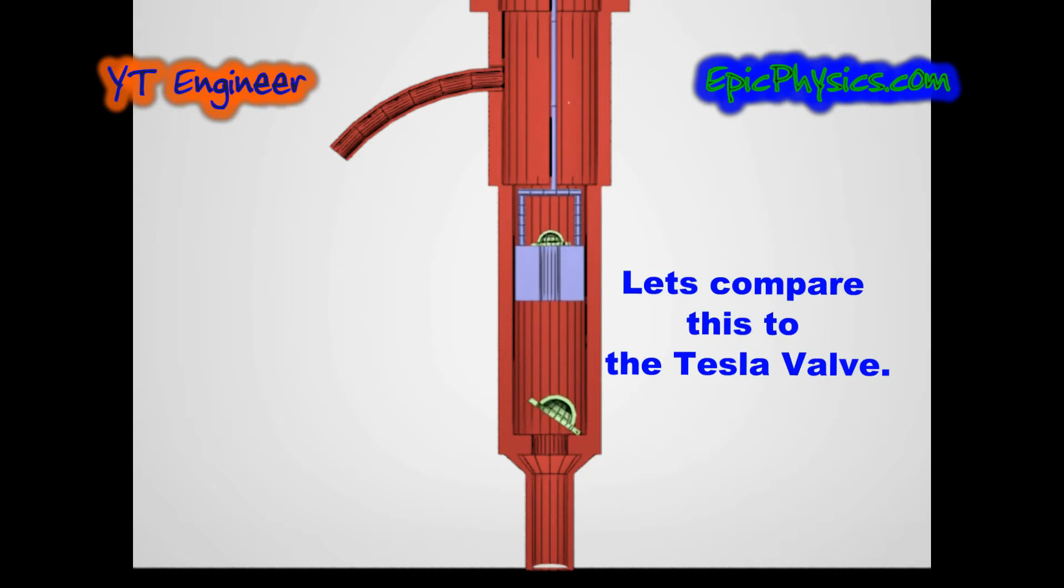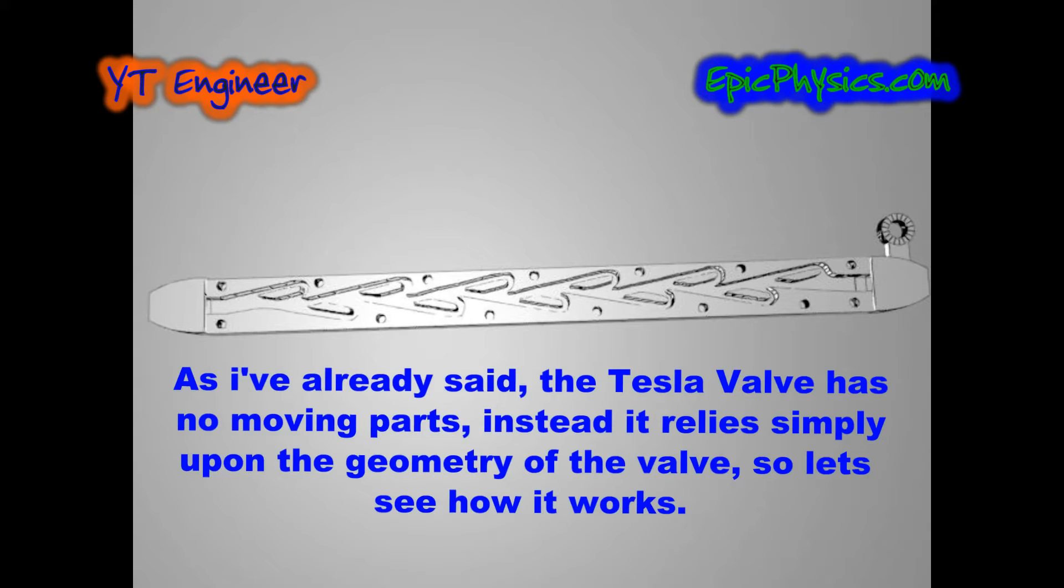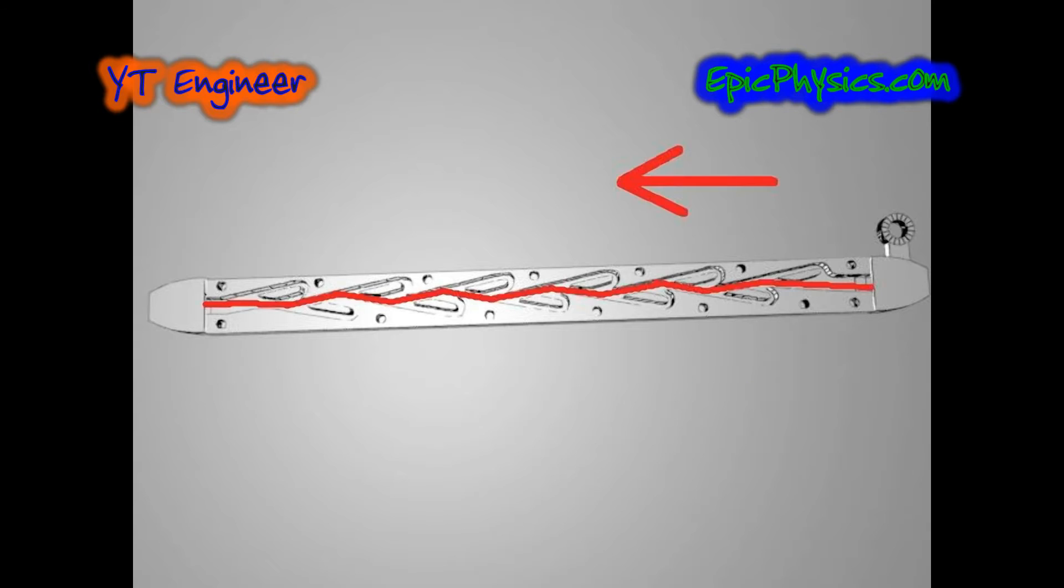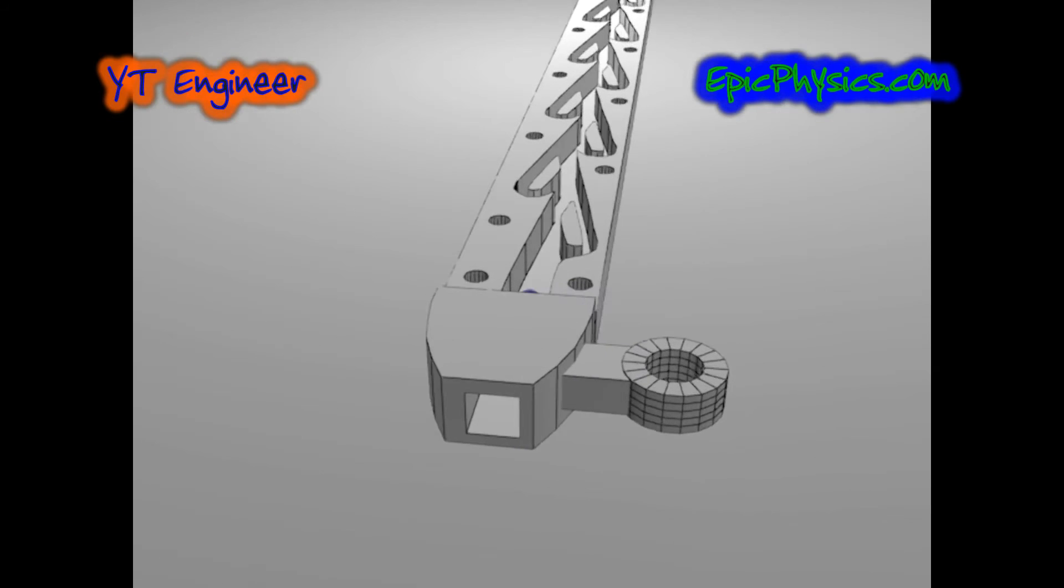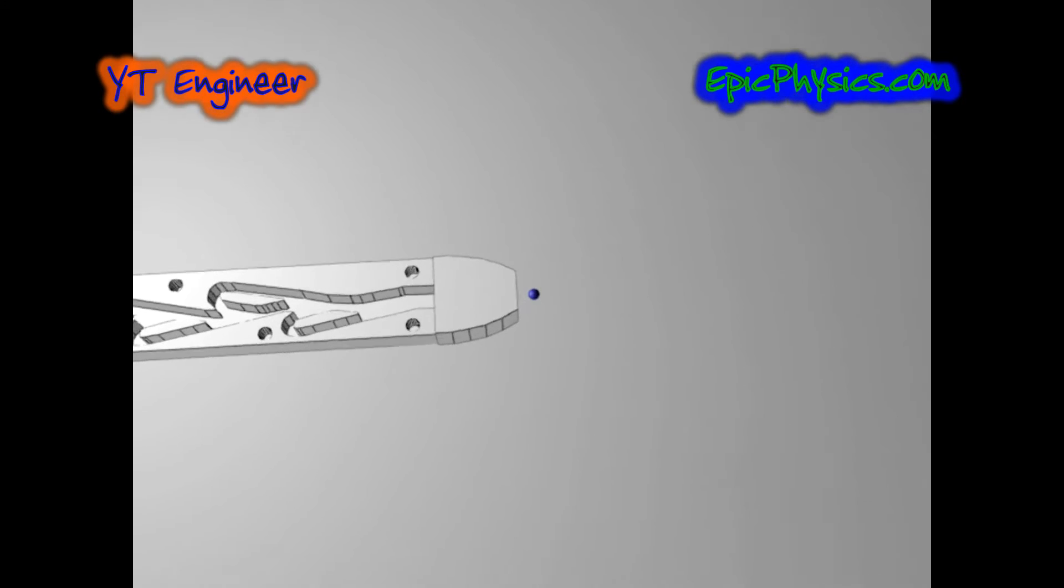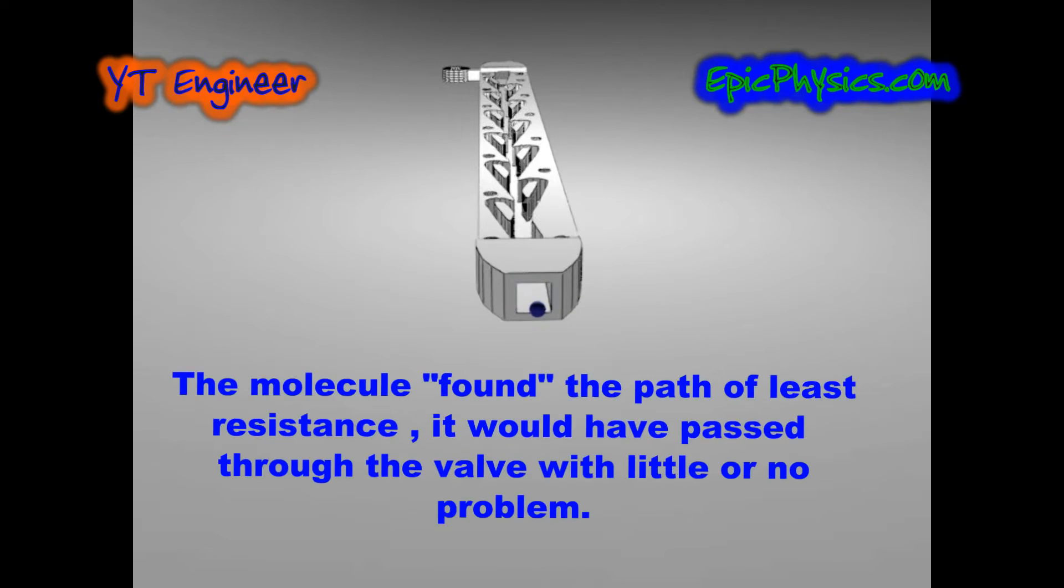Let's compare this to the Tesla valve. As I've already said, the Tesla valve has no moving parts. Instead it relies simply upon the geometry of the valve. So let's see how that works. If I try to blow into the valve from right to left, you will notice that a molecule has a simple path through. The molecule found the path of least resistance. It would have passed through the valve with little or no problem.